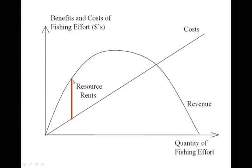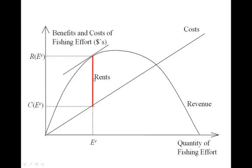The net benefits from any level of fishing effort below that crossing point is the distance between the cost curve and the sustainable revenue curve. If we maintain a given quantity of fishing effort indefinitely, we get a level of profits — we call these resource rents, because they are profits made available from the biological resource behind the scenes. Profits are maximized where the slope of the sustainable revenue curve equals the slope of the cost curve, giving us the biggest distance between the two curves. That's the economically efficient level of effort.